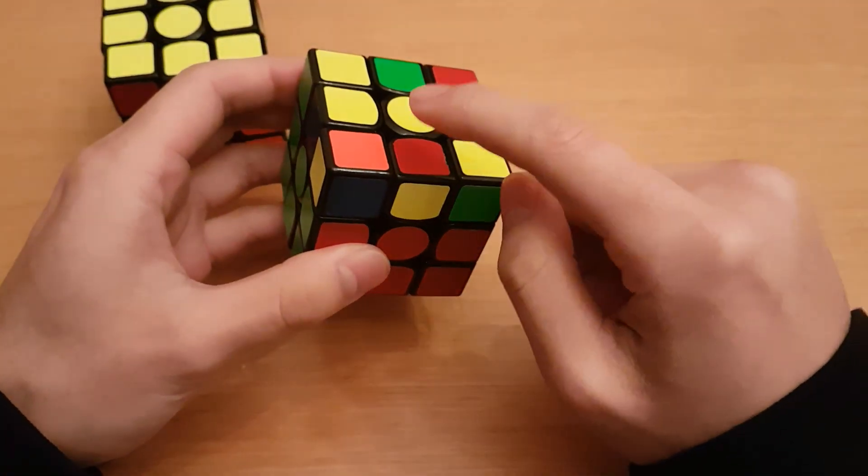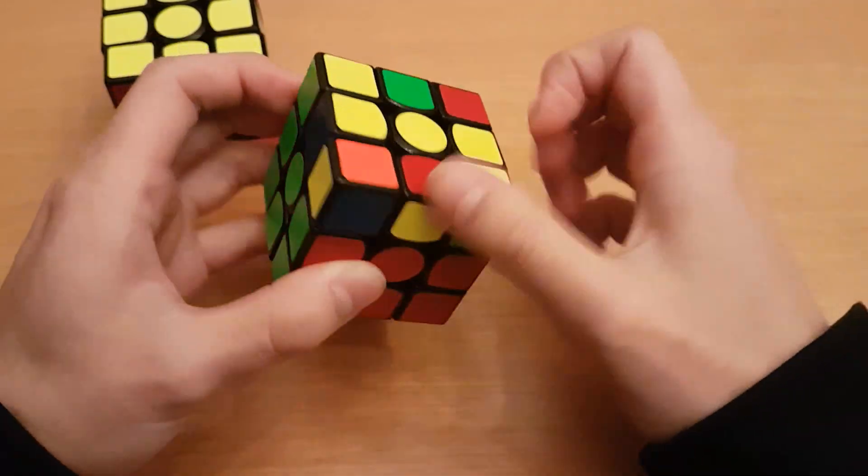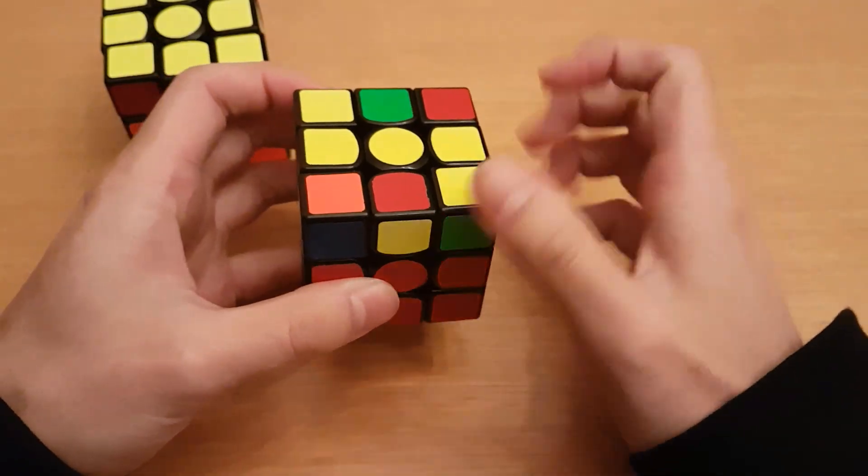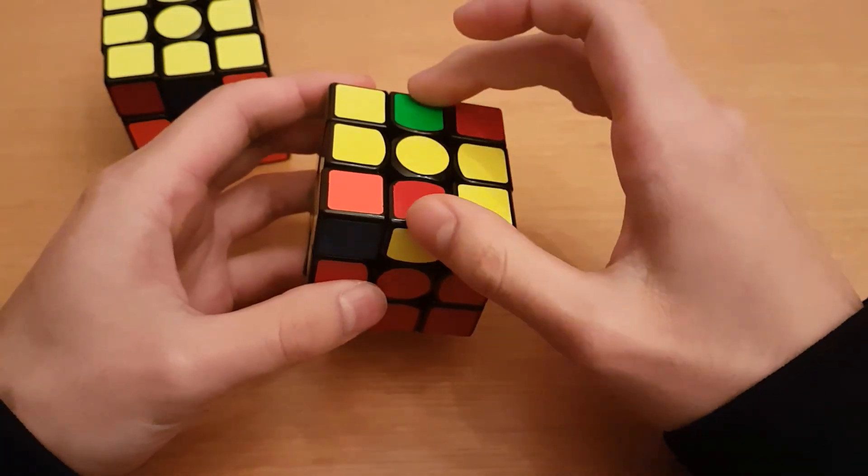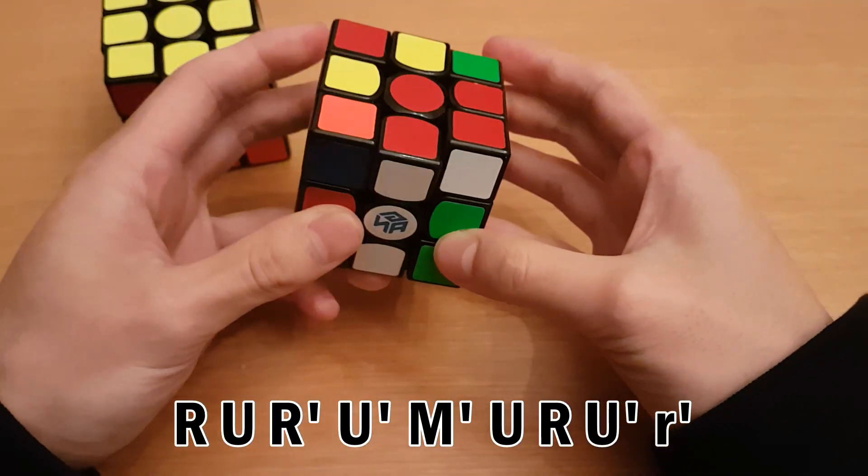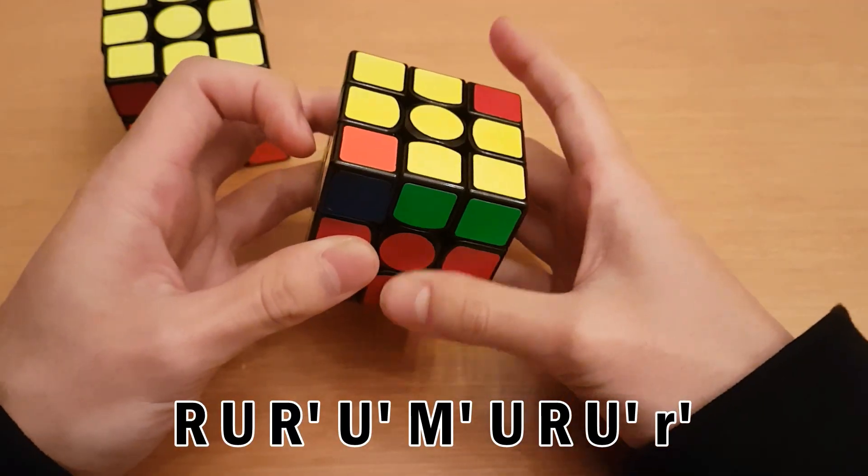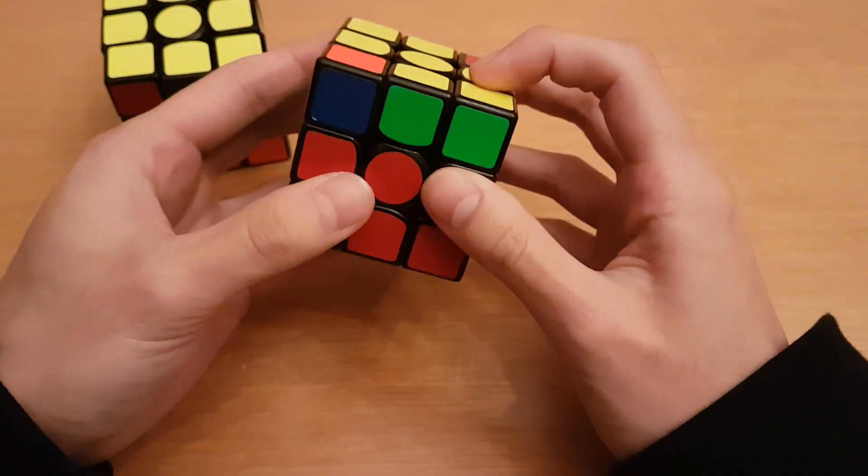Here you see this is the bowtie case, also called L. You can do the algorithm that flips these two: sexy move, M prime, reverse sexy move, and it maintains the corner orientation.